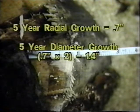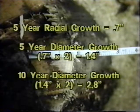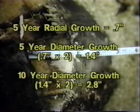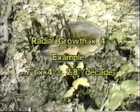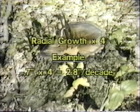Since we want to express growth in inches per decade, we must multiply that figure by two to get an estimate of 2.8 inches overall diameter growth per decade for this individual tree. In other words, diameter growth in inches per decade can easily be estimated by simply measuring the last five growth rings and multiplying by four.